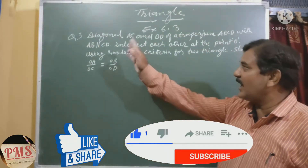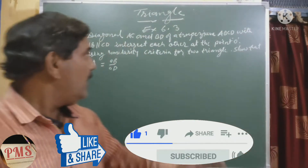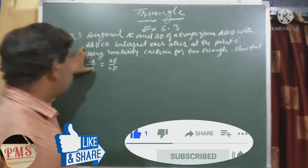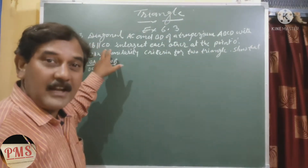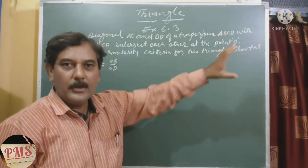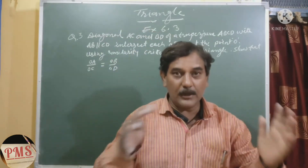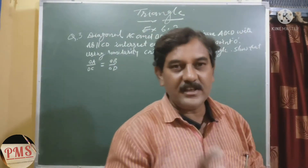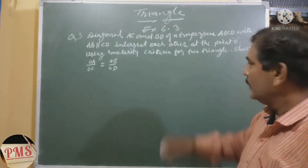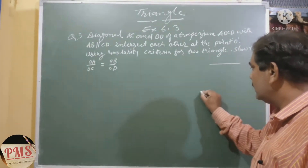Now Question Number 3: The diagonals AC and BD of trapezium ABCD, with AB parallel to CD, intersect each other at point O. A trapezium is given where AB and CD are parallel, and the diagonals AC and BD intersect at O.